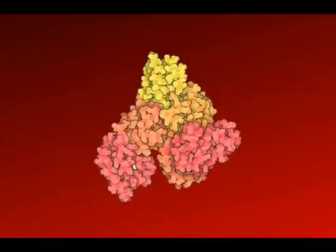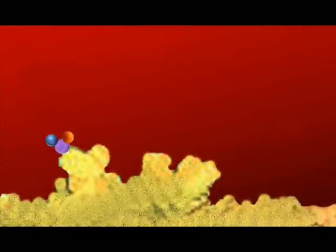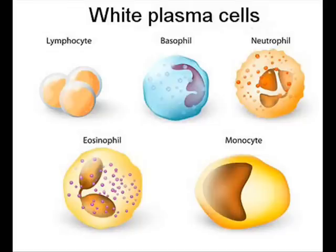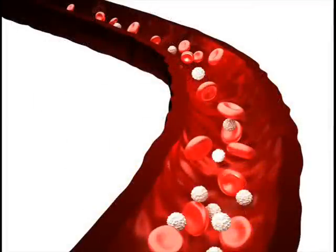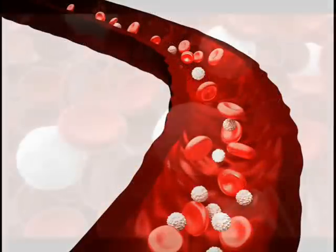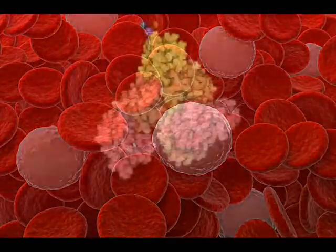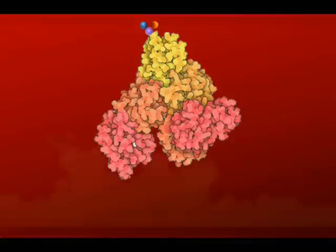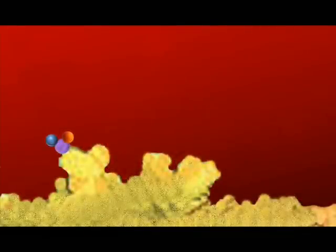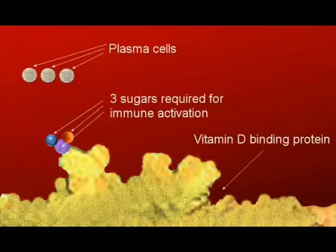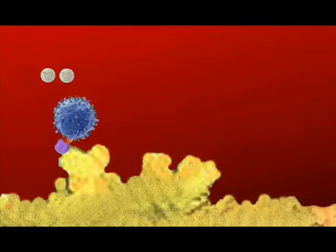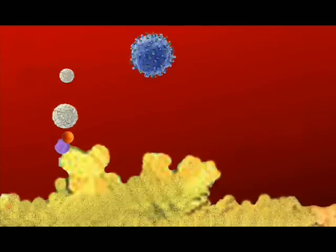On this third domain we find three sugars required to activate our immune cells. Our white plasma cells are produced in our liver, lymph nodes and bone marrow, from where they enter the bloodstream. However, at this time they are not fully active immune cells — instead they are dormant and consume just enough energy to stay alive. To become active immune cells, our plasma cells require vitamin D transport protein. Here we see our white plasma cells interacting with the three sugars on vitamin D transport protein to become fully active immune cells.